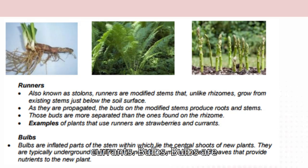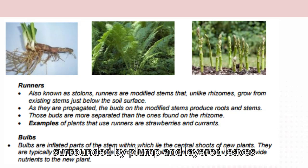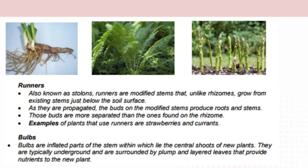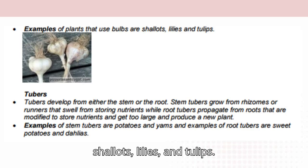Bulbs: bulbs are inflated parts of the stem within which lie the central shoots of new plants. They are typically underground and are surrounded by plump, layered leaves that provide nutrients to the new plant. Examples of plants that use bulbs are shallots, lilies, and tulips.